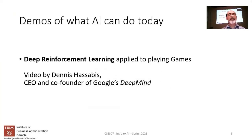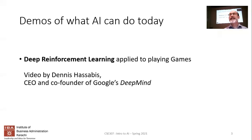The first short video I'd like to show you is an example of deep reinforcement learning. We spoke about the different areas in which neural networks — deep neural networks — are being used today, and one of them is deep reinforcement learning. I'm going to show you a short clip of its use in playing games. This clip is about five years old and it's by Dennis Hassabis, the CEO and co-founder of Google's DeepMind.